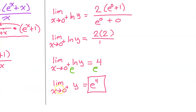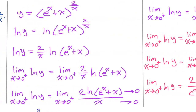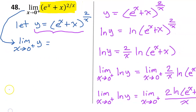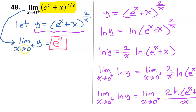Let's scroll back. We were looking for the limit as x approaches 0 from the right of y, and we found it equals e to the 4th power. The original problem was the limit as x approaches 0 from the right of the original expression, but we had replaced it with y. So finding the limit of y was indeed finding the original limit. Therefore, e to the 4th power is the final answer.